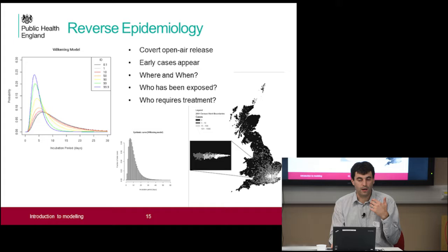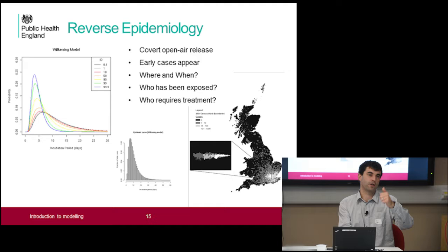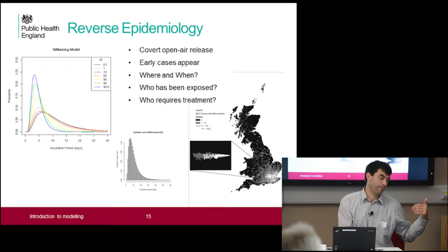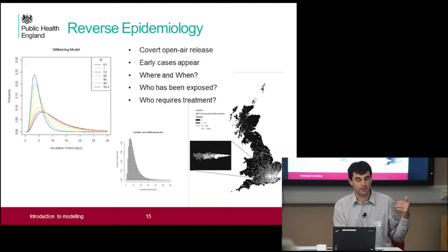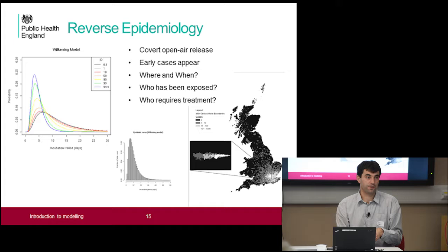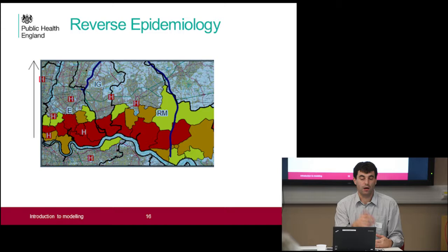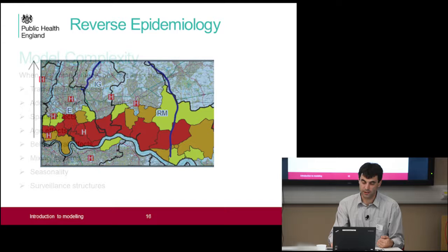Then there's reverse epidemiology — trying to predict or work out where something originated from. This is not a human-to-human transmissible infection but simply a bacterial agent you become infected with by inhaling a cloud of matter. You have some covert release, early cases start to appear, and in your surveillance systems cases start to go up. How can you predict when the event occurred and where, so you can start to target people to treat and create policy advice by prioritising areas of space to target interventions?